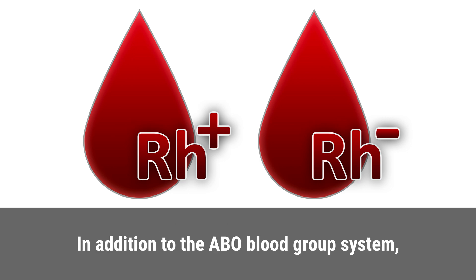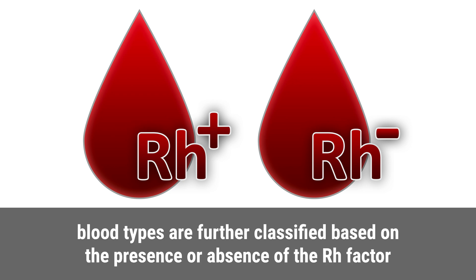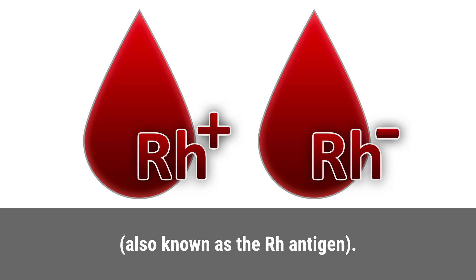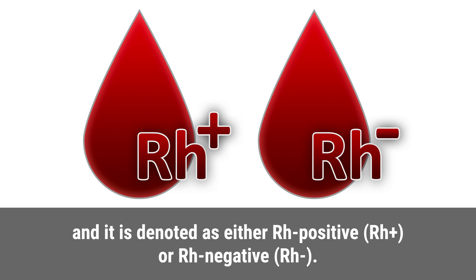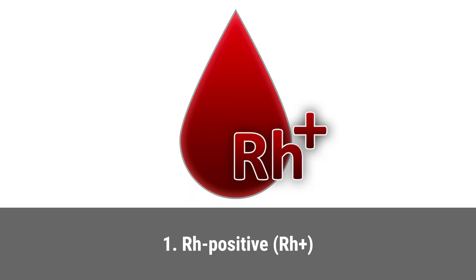Blood types are further classified based on the presence or absence of the Rh factor, also known as the Rh antigen. The Rh factor is another antigen that can be present on the surface of red blood cells, and it is denoted as either Rh positive or Rh negative.